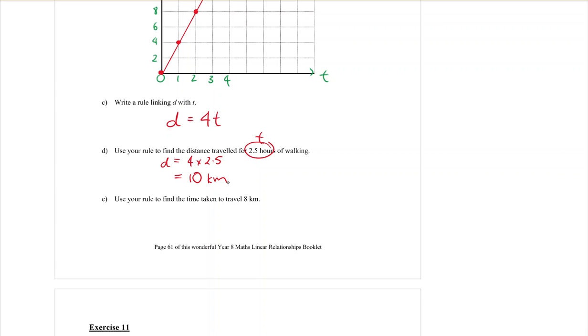Part E, use your rule to find the time taken to travel 8 kilometers. The 8 kilometers is a distance. That is the distance they have traveled and I'm trying to find the time. So I'm going to put that into my formula. So it was D equals 4T, but the distance is 8. So it's 8 equals 4T. Now I know you can work this one out in your head, but they won't always be this easy. If I want to solve that equation, I have to get the T by itself. So I'm going to divide by 4, divide by 4, swap sides, T on the left, 8 divide by 4 equals 2. T equals 2. Time, T for time. What was my units for time? Hours? Yes, it was. Good. So it's going to take 2 hours to travel 8 kilometers. That's it. Your turn.